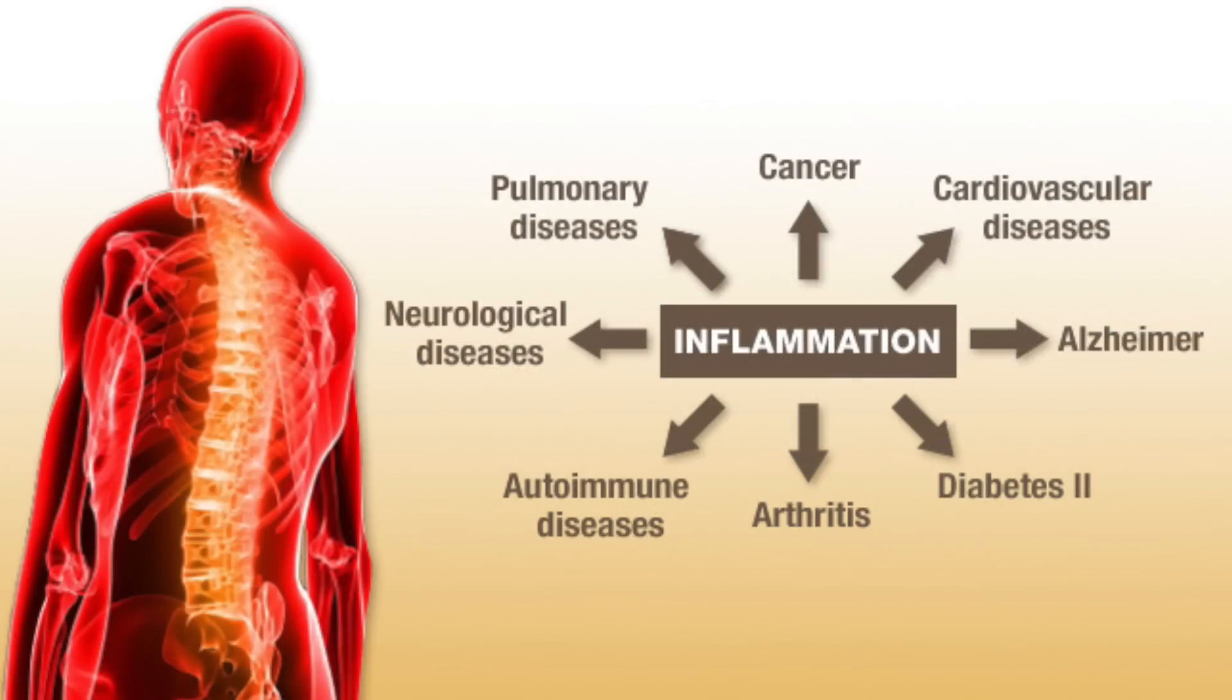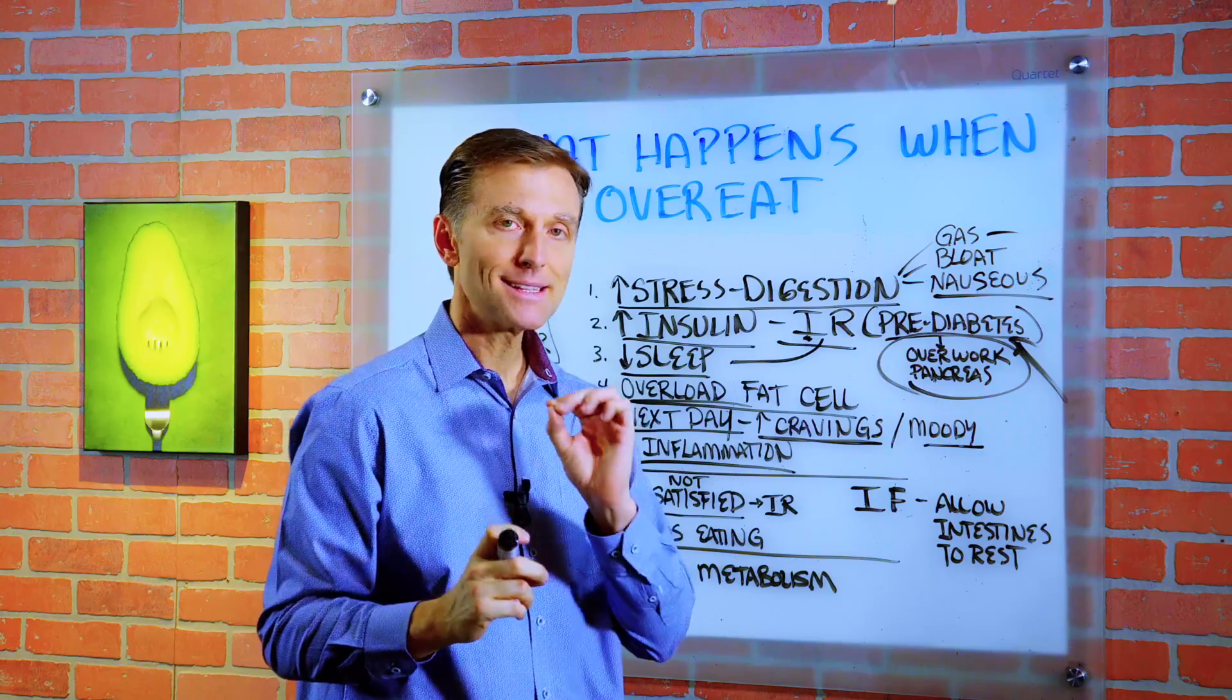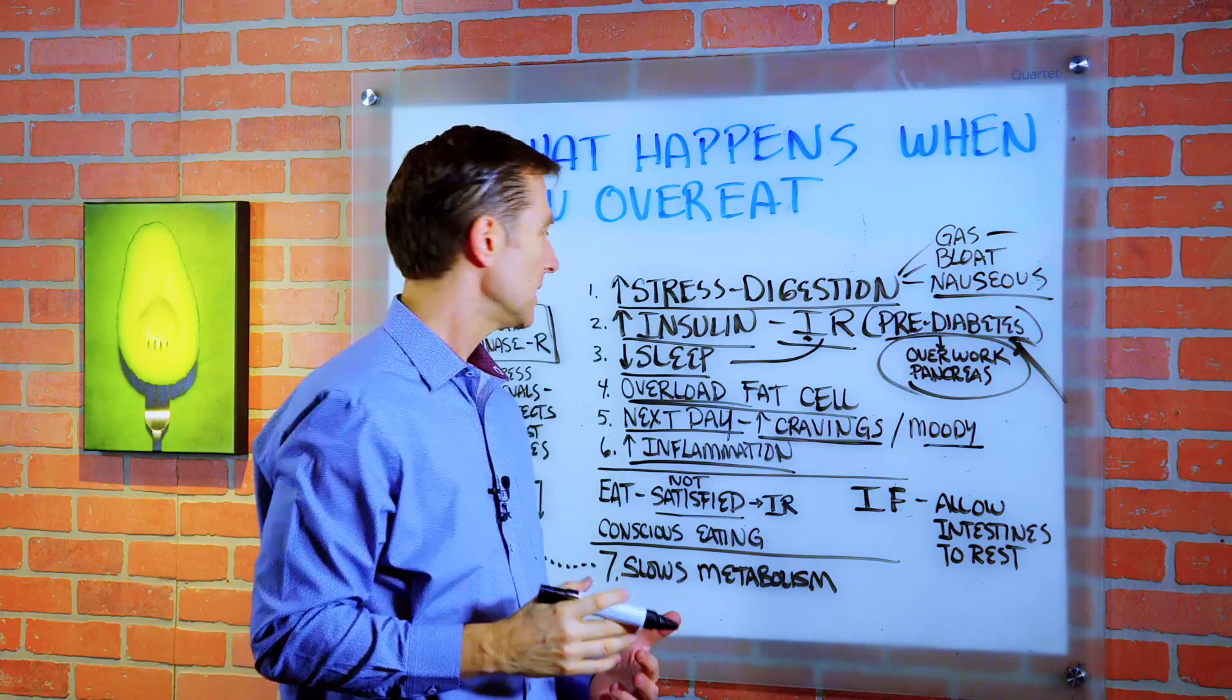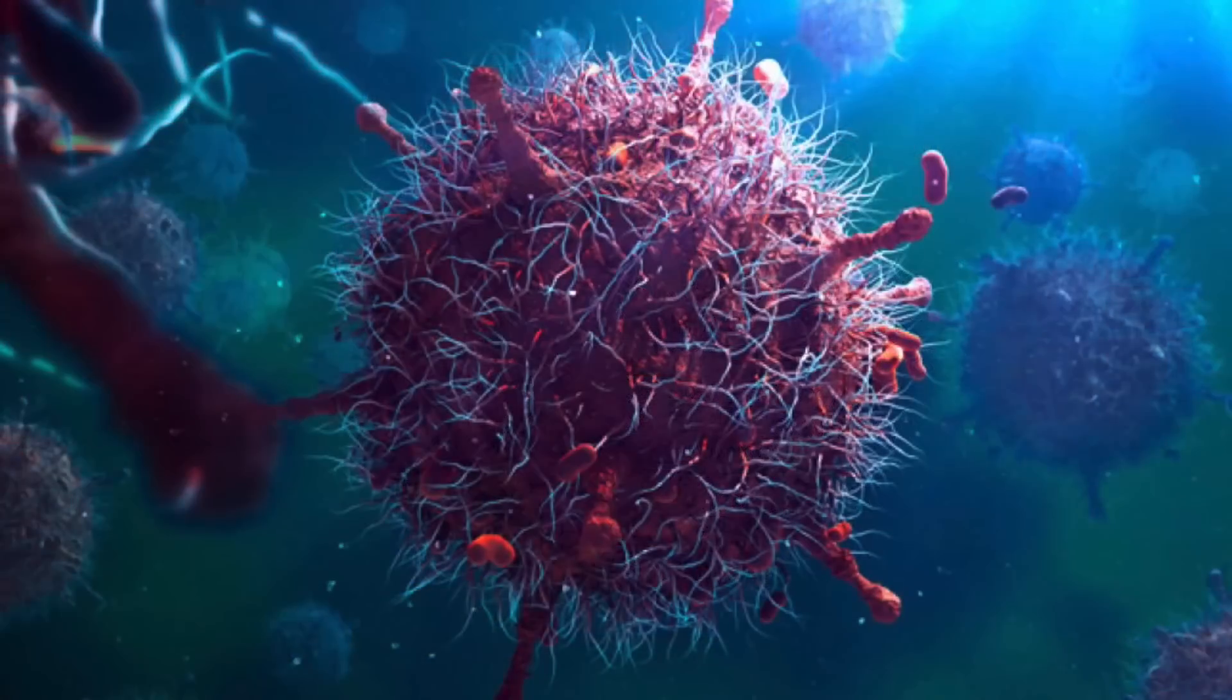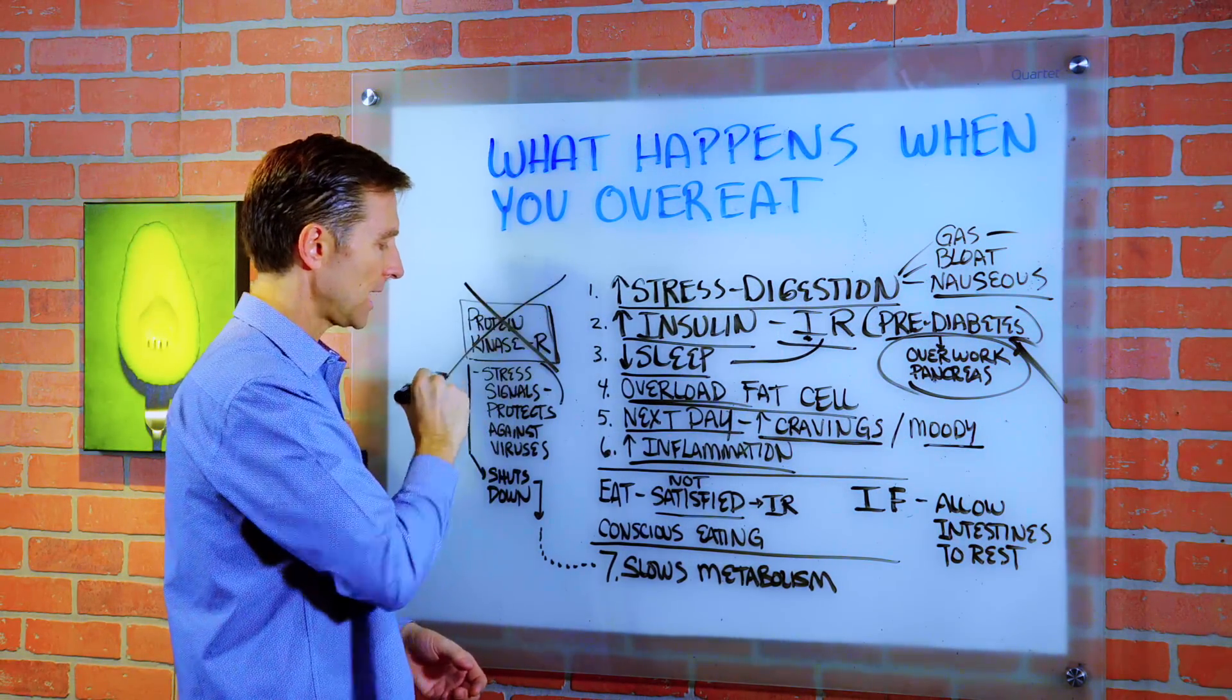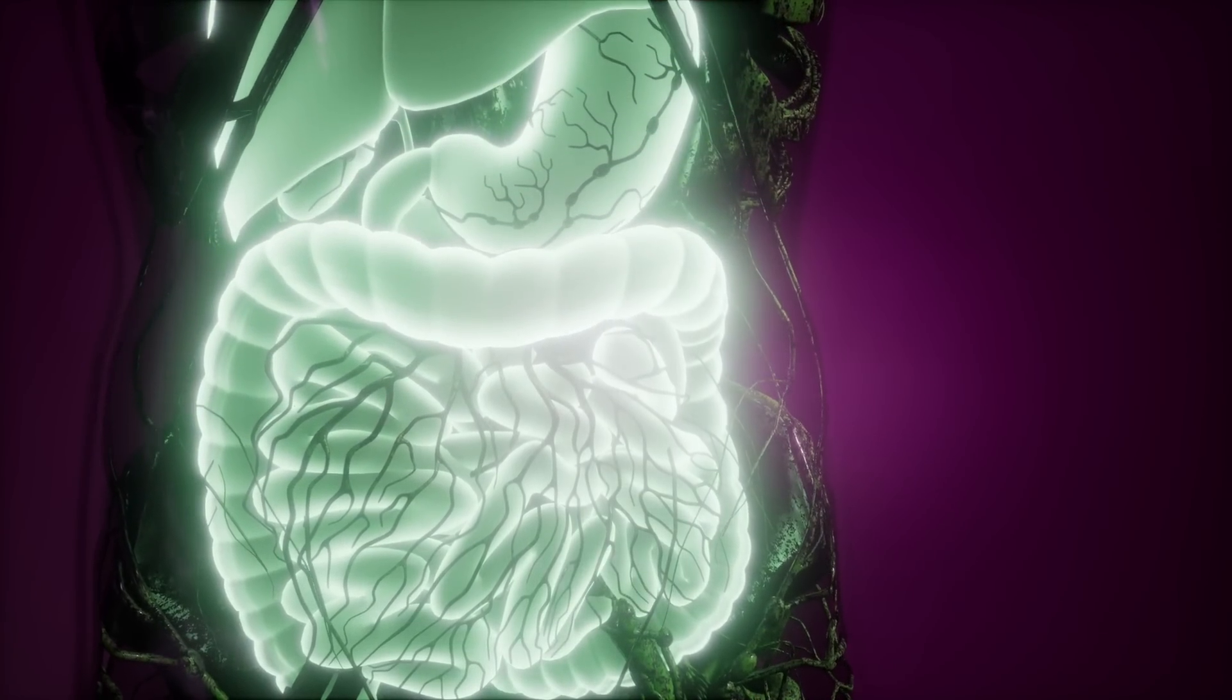Then you get all sorts of inflammatory conditions, okay? Primarily because of the high levels of insulin. There's a certain enzyme called protein kinase R in your body that is involved in stress signals and it protects you against viruses. When you overeat, this enzyme is suppressed. Okay. It shuts down. And that starts slowing your metabolism.